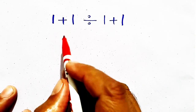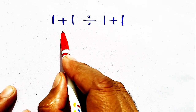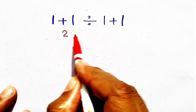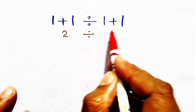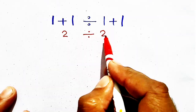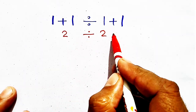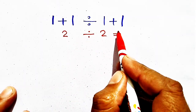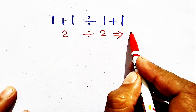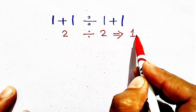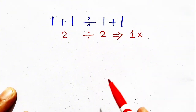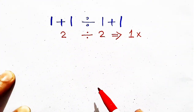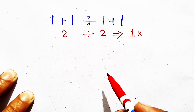The question 1 plus 1 divided by 1 plus 1 equals 2. 2 divided by 2 will be equal to 1. But 1 is not the correct answer because there is some mistake.